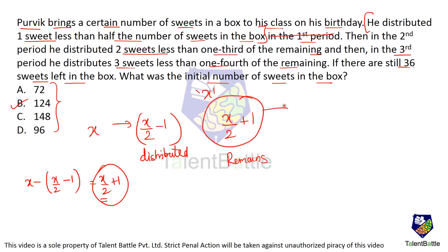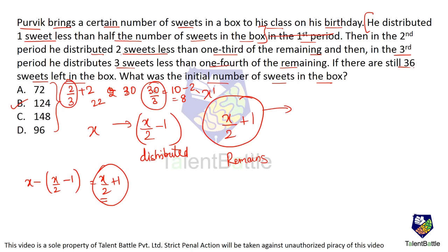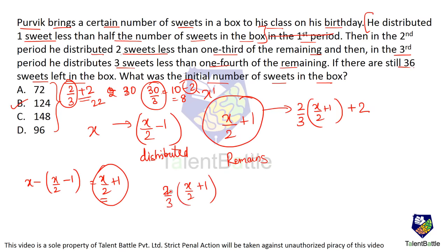From the remaining (x+2)/2, in the second period he distributes two sweets less than one third. So out of any amount, two-thirds remain plus two extra sweets. For example, with 30 sweets: one third is 10, minus 2 distributed means 8 distributed and 22 remain — that is two-thirds plus 2. So after the second period, remaining is 2/3 × (x+2)/2 + 2.